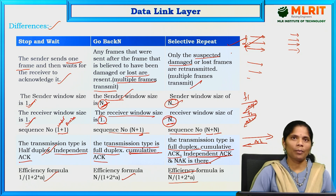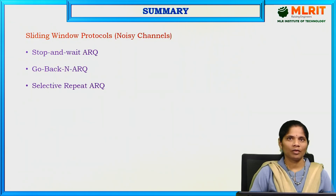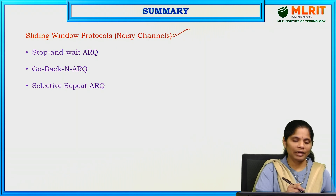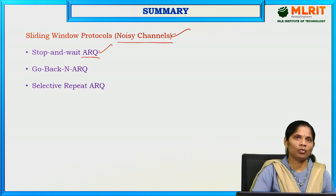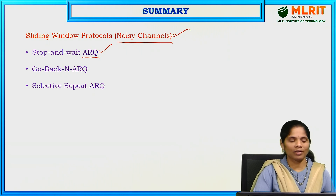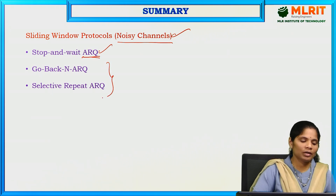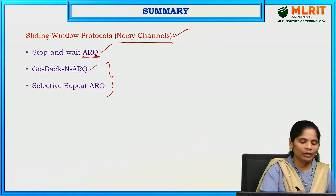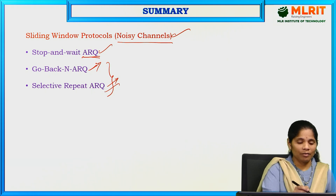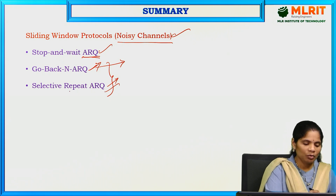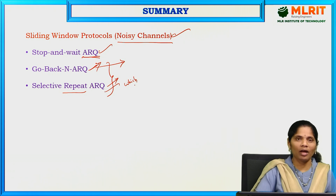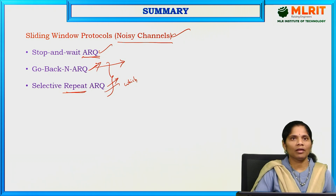In summary, today's session covered sliding window protocols for noisy channels. We discussed Stop and Wait ARQ — how frames are sent from sender to receiver one at a time. Then Go Back N ARQ and Selective Repeat ARQ, which are the two sliding window protocols. In Go Back N, from the lost frame onwards all frames are retransmitted. In Selective Repeat, only the specific lost frame is retransmitted. These are the sliding window protocols for noisy channels in the flow control mechanism.